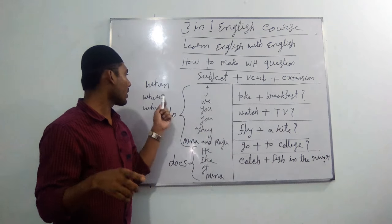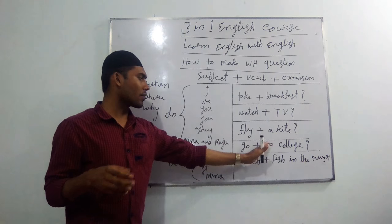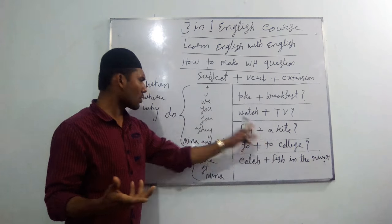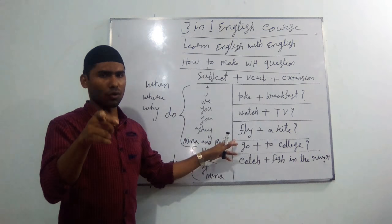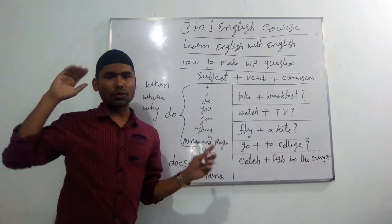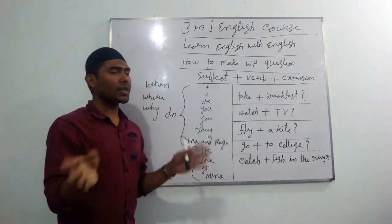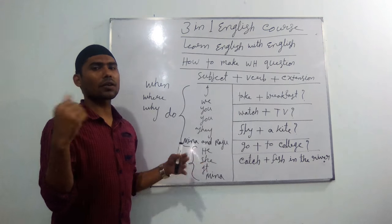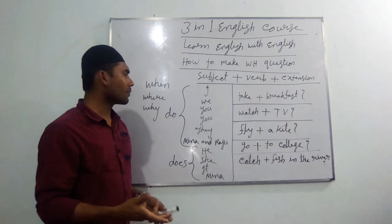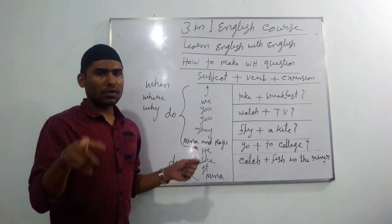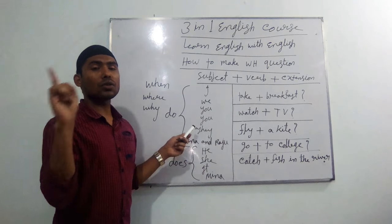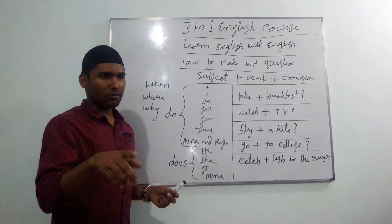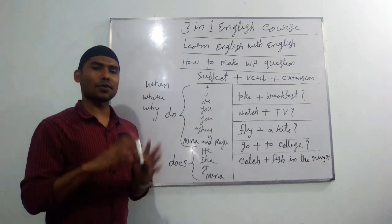Let's also practice 'where' with the verb 'go.' 'Where do you go?' — Tumi kothay jao. 'Where do they go?' — Tara kothay jai. 'Where does Mina and Raju go?' — Mina and Raju kothay jai. 'Where does she go?' — Se kothay jai. For answers: 'Where does she go?' — She goes to college. 'Where do you go?' — I go to college. 'Where does Mina go?' — Mina goes to college. By this way we can answer.